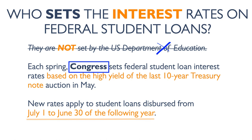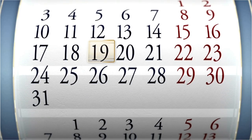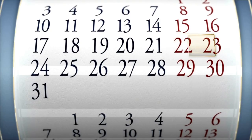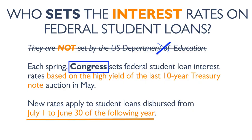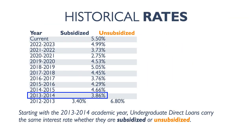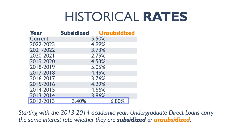Student loans dispersed between new academic years, starting July 1st of the current year until June 30th of the next year. Beginning with the 2013-2014 academic year, both subsidized and unsubsidized undergraduate loans have carried the same interest rate.